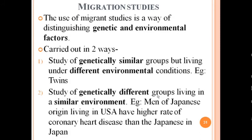Migration studies are a way of distinguishing genetic and environmental factors. They can be carried out in two ways: studying genetically similar groups living under different environmental conditions, or studying genetically different groups living in similar environments. For example, men of Japanese origin living in the USA have higher rates of coronary heart disease than Japanese people living in Japan. Migration studies are also an example of place distribution.